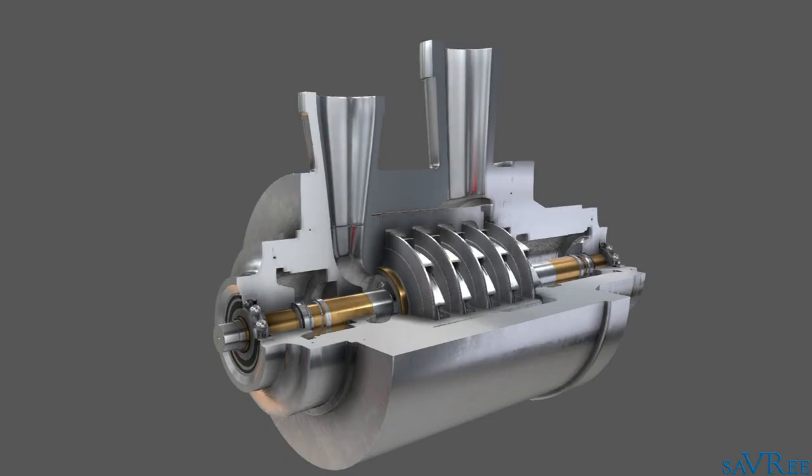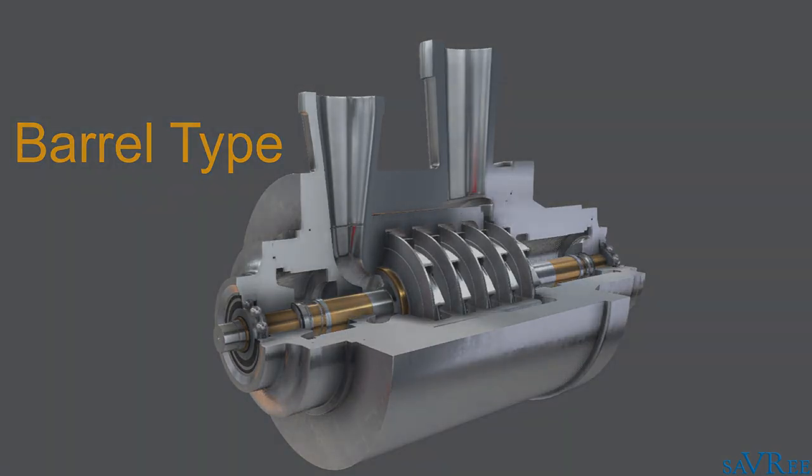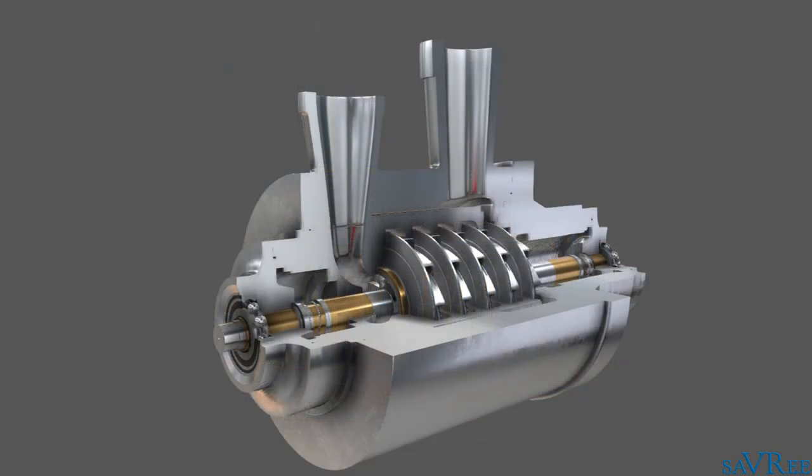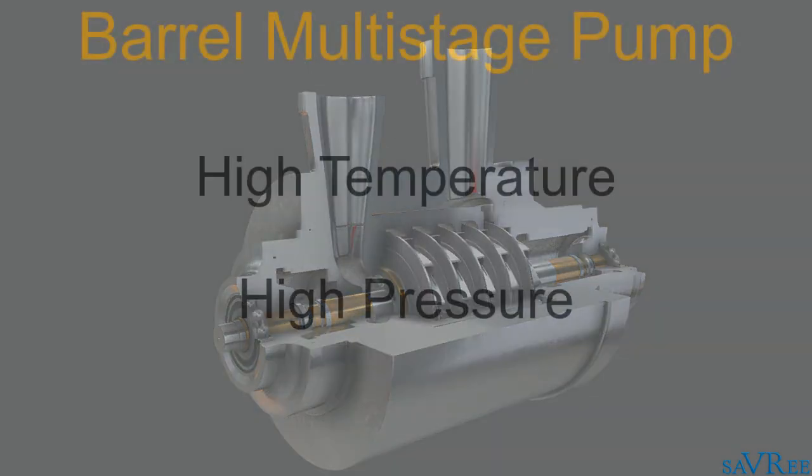There are two main types of multistage pump designs. One is the barrel type, and the other is the ring type. The type of pump we're looking at in our example is a barrel type multistage pump. Barrel type multistage pumps are typically used for high temperature and high pressure applications.